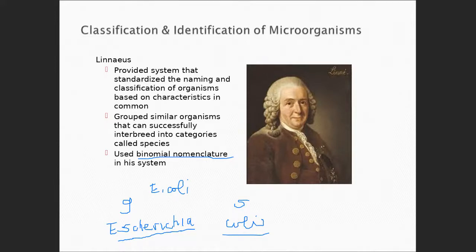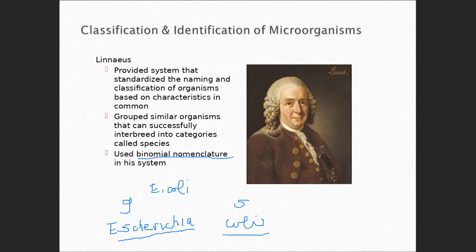Back then, to distinguish them — because they didn't have computers or typewriters — they underlined scientific names to say they were very important terms. Nowadays, if you're handwriting them, you underline them; if you're putting them in typeset using a word processor, you italicize them. This is what Linnaeus came up with — the scientific name, the binomial nomenclature system. Binomial means two names. The scientific name is composed of two names: a genus and a species. You need to be able to recognize a genus and species.